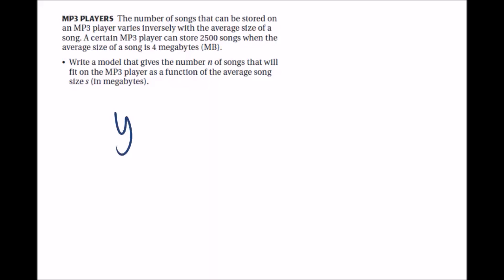We're just going to use our equation, y equals k over x, and it gives us some information to start with. It says there's 2,500 songs when each song is 4 megabytes. So we're just going to plug that into x and y. 2,500 songs equals k over 4. We're going to solve for k. k is equal to 10,000.